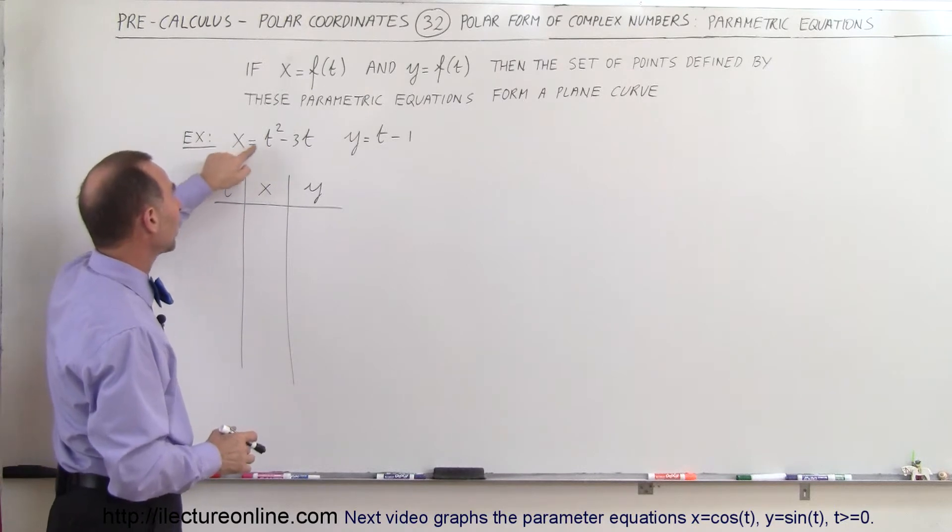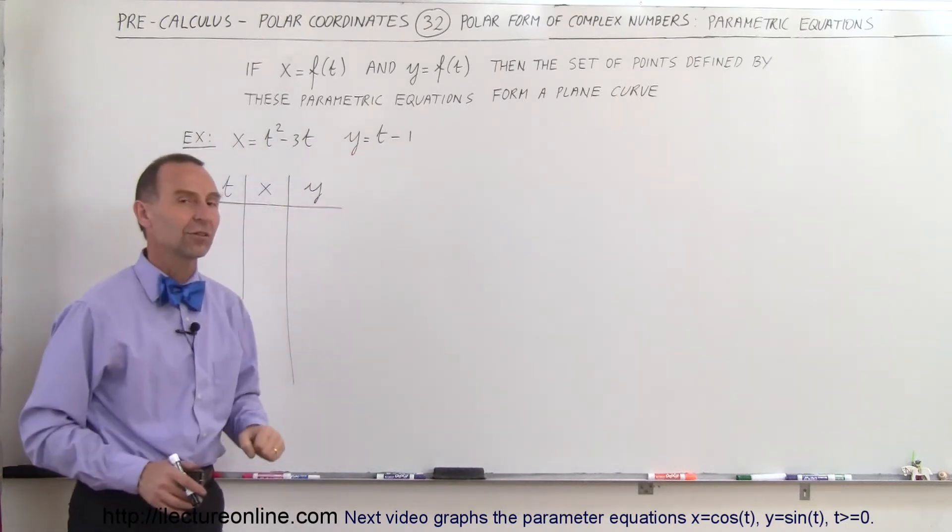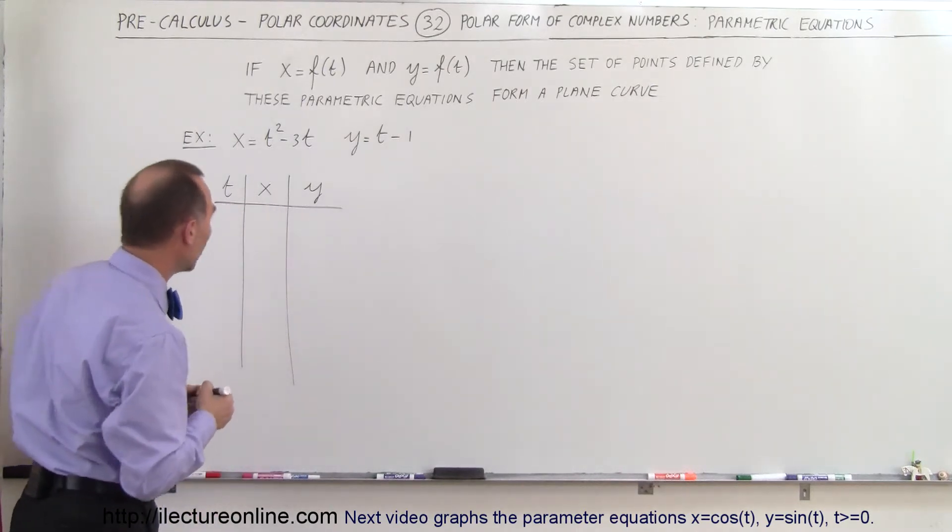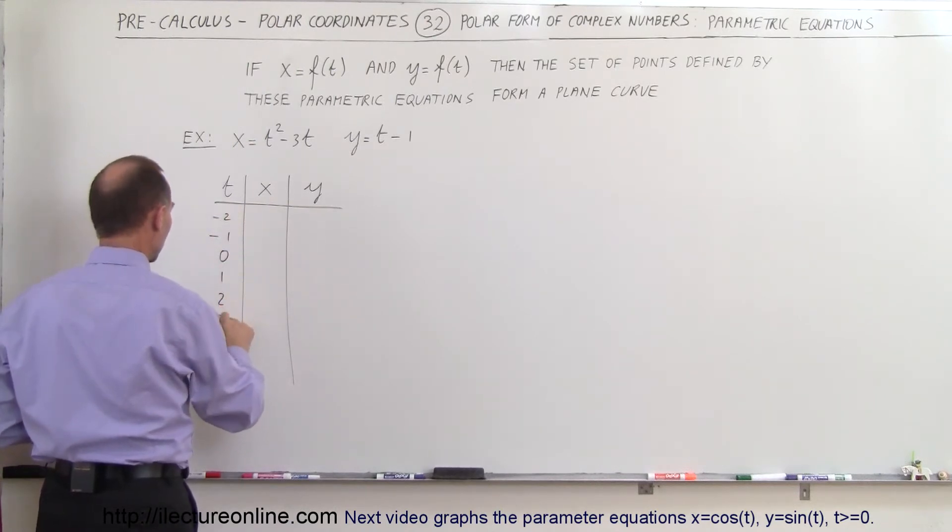So x will have certain values for certain values of t, y will have certain values for the same values of t. So we'll plug in some values for t and see what we get for x and y. So let's start with -2, -1, 0, 1, 2, 3, and 4.